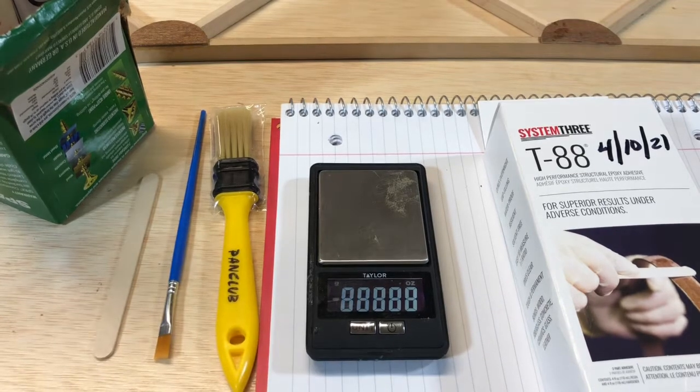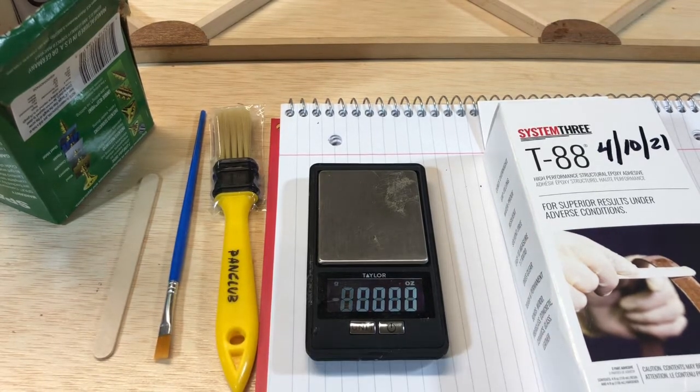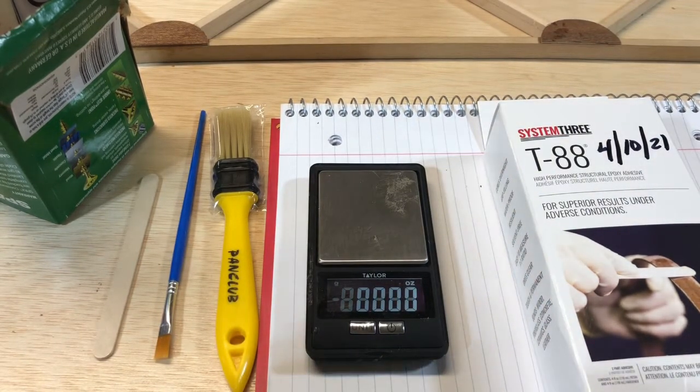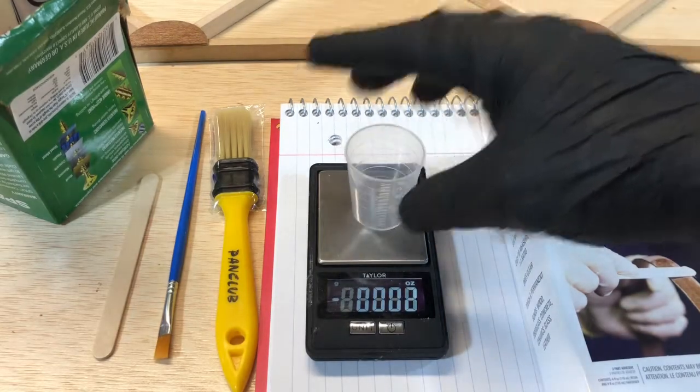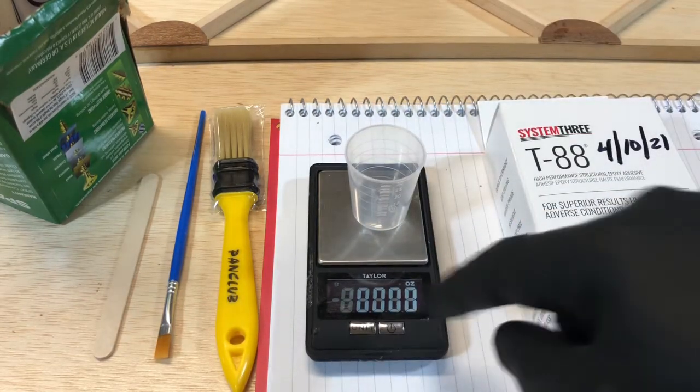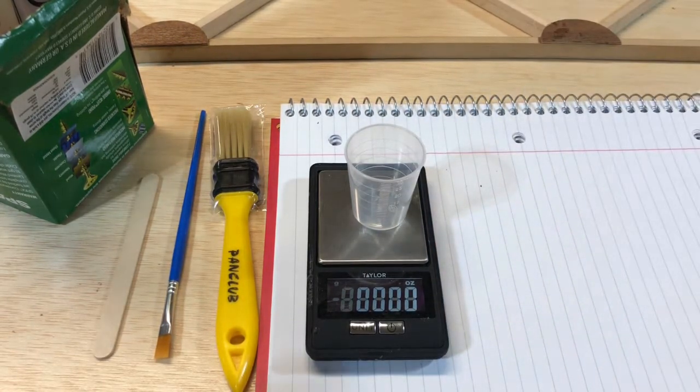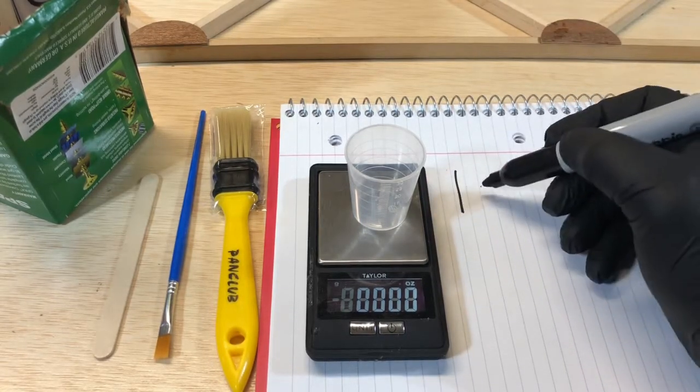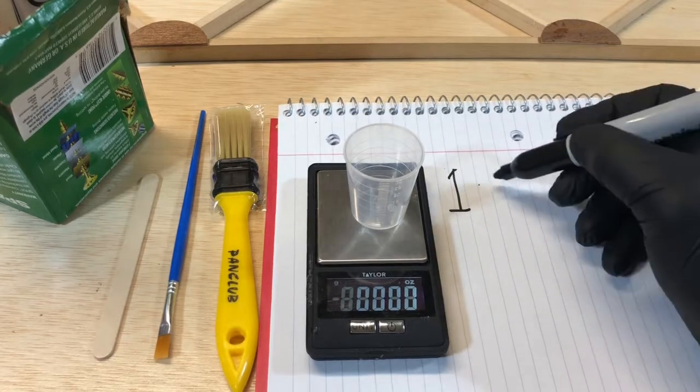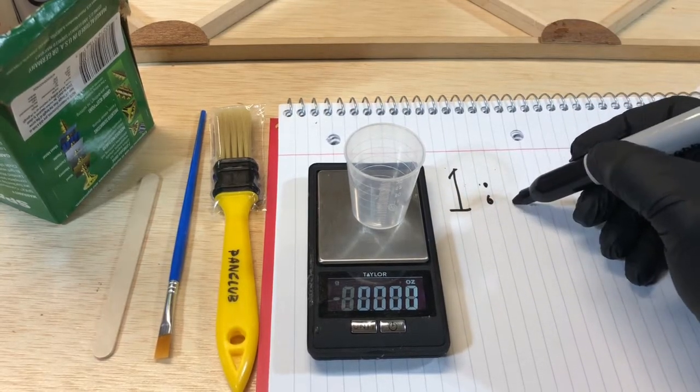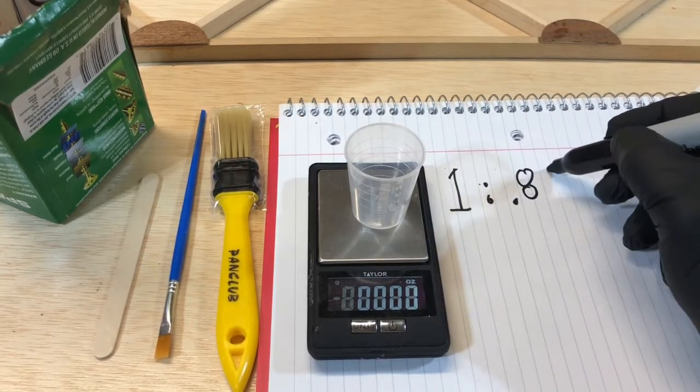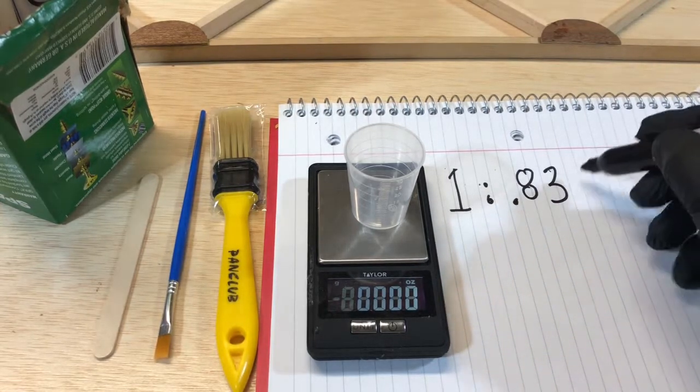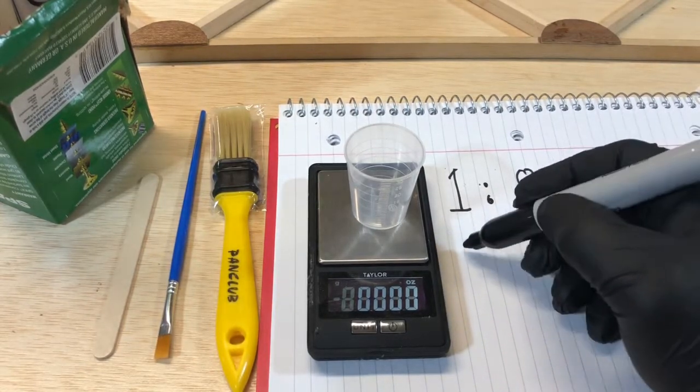Now T88 by weight is mixed one to two point eight three, so we would start with a scale like that and zero it out. Now to show you what I mean, let's say we were going to mix a whole ounce of part A. One part of part A, we would mix that with point eight three of part B, the darker color.